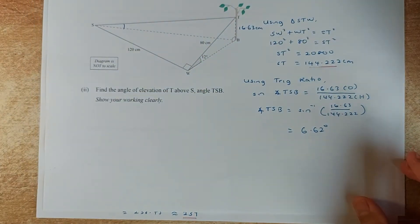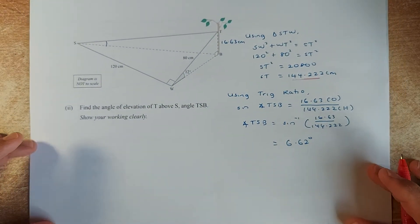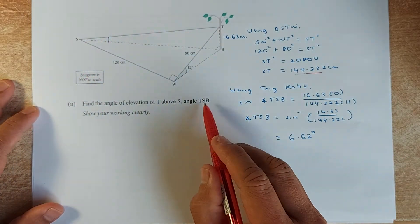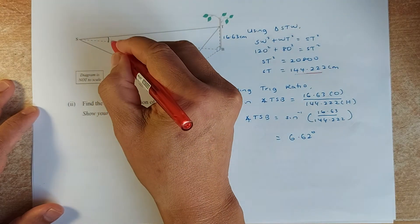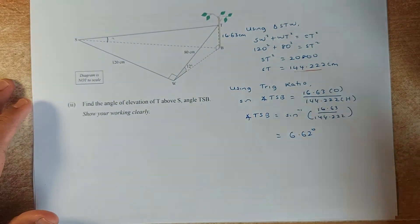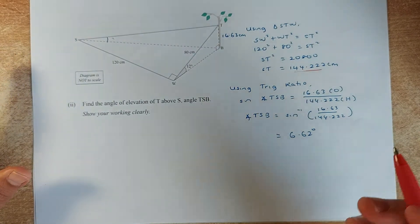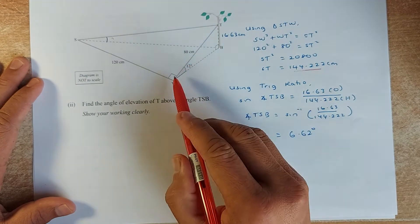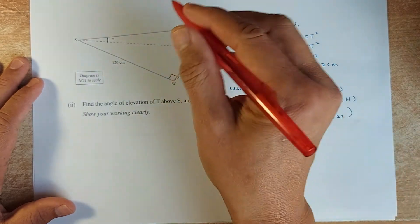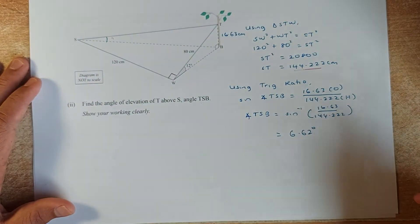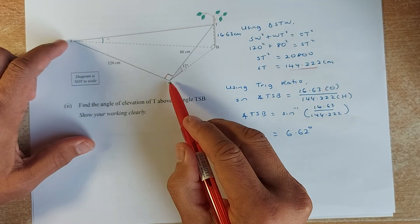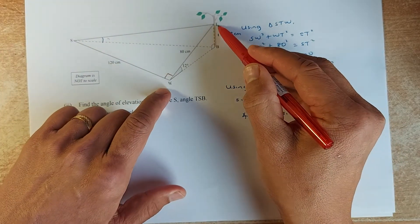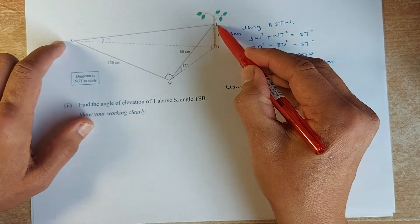The next question is a merit question asking for the angle of elevation, specifically angle TSB. This is a 3-dimensional shape. We look at triangle SWT, which has a 90-degree angle. To calculate length ST, we use the Pythagorean theorem: SW squared plus WT squared equals ST squared. Substituting: 120 squared plus AT squared gives ST squared equal to 20,800.